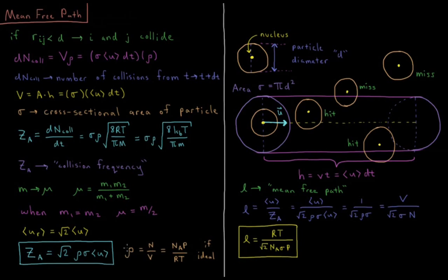Looking at the density of the gas: density rho equals the number of particles divided by the volume available to them. For an ideal gas, using the ideal gas law, this equals Avogadro's number times pressure divided by the gas constant times temperature.